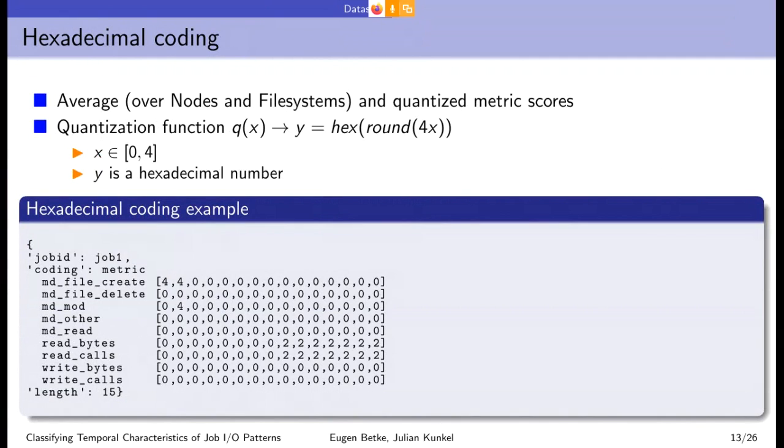Hexadecimal coding describes the hexadecimal values that we obtain by aggregating node and file system dimensions. Aggregating the dimensions by computing the mean value, we obtain a floating number between zero and four because the maximum score is four. What to do next, we do a kind of quantization. We map this floating point number to a hexadecimal number. On the slide you can see the function. It's just multiplication of the mean value by four, round the value, and then we obtain the hexadecimal representation number.